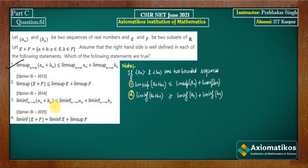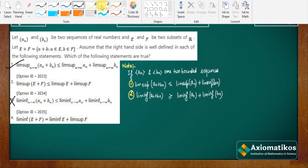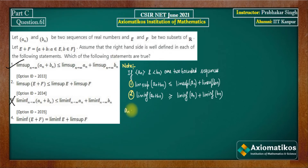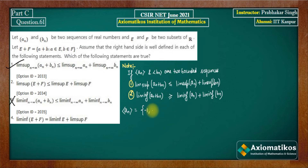Now if you look at the third option, its inequality is just the reverse of what we have written. That is why we are directly marking it as incorrect for now. But you can also take a small counter-example. For example, let the sequence An be: minus 1, 1, minus 1, 1, minus 1, 1 — an alternating sequence of this form.